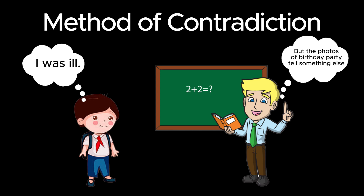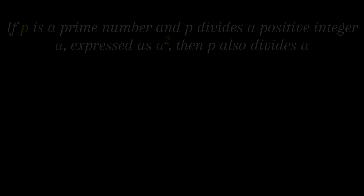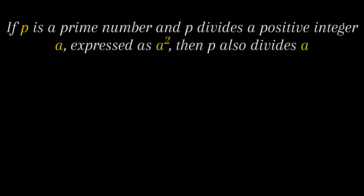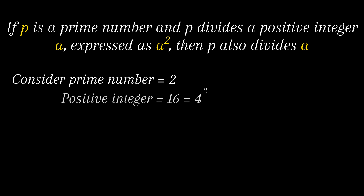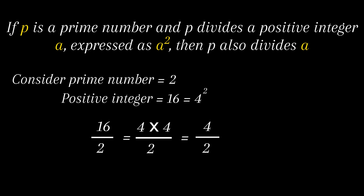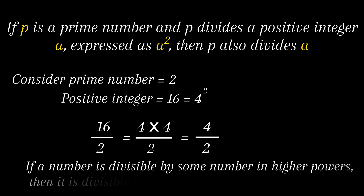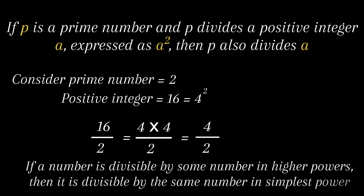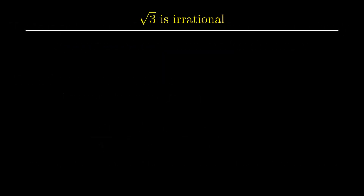After understanding contradiction, let's understand one theorem that will help prove non-perfect roots as irrational. The theorem states that if p is a prime number and p divides a positive integer a expressed as a square, then p also divides a. For example, consider 2 as a prime number and 16 as a positive integer expressed as the square of 4. Since 16 is divisible by 2, this implies 4 is also divisible by 2. In simple words, if a number is divisible by some number in higher powers, it is also divisible by the same number in its simplest powers.